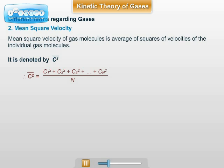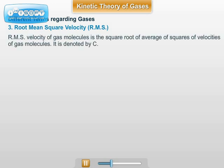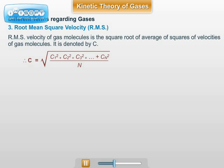But the unit of mean square velocity will be meter² per second², and the unit of velocity should be meter per second. Hence, root mean square velocity or RMS velocity is defined and calculated. RMS velocity of gas molecules is the square root of the average of squares of velocities of gas molecules individually. It is denoted by C. Hence, C = √((C1² + C2² + C3² + ... + Cn²) / n).